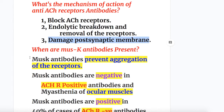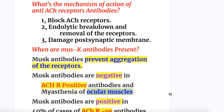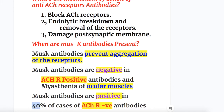MuSK antibodies prevent the aggregation of the receptors. They are negative when acetylcholine receptor antibodies are positive and in Myasthenia Gravis of the ocular muscles. MuSK antibodies are present or positive in 40% of cases where acetylcholine receptor antibodies are negative.